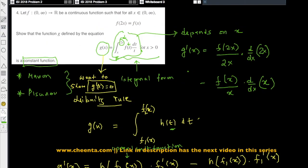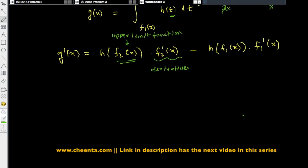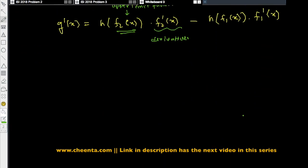So what do we have here? We will have this is f of 2x divided by 2x times 2, derivative of 2x is 2, minus f of x by x, derivative of x is 1. So you can cancel this 2 and 2.